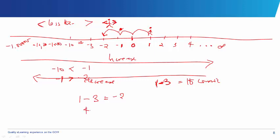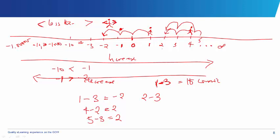Let's take another example: 4 minus 2. That means you are standing at position 4 and you are told to go 2 steps backwards, which gives us 2. Just like 5 minus 3 equals 2 — if you are at position 5 and count 1, 2, 3 steps back, you land at point 2. Also, 2 minus 3 means you are at position 2 and you move 3 steps toward the negative direction: 1, 2, 3 — and the answer is minus 1.